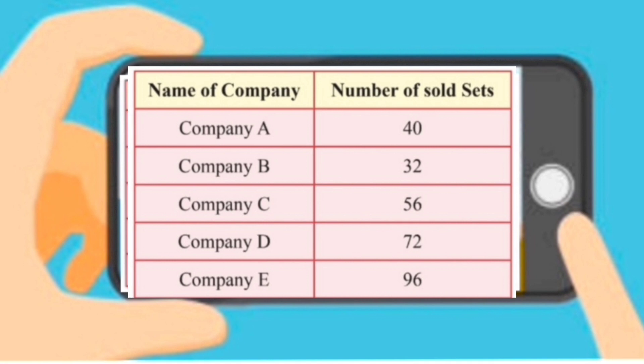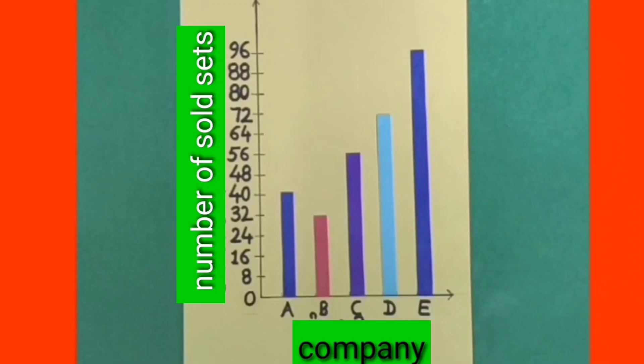Before representing this data on a bar graph, let's learn what a bar graph is. A bar graph is a graph which represents data vertically or horizontally with the help of a rectangular bar. The length of this rectangular bar depends upon the given data.